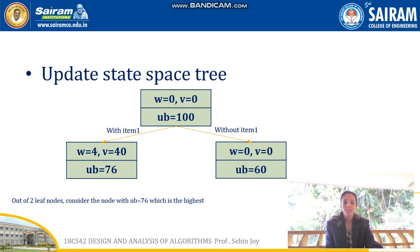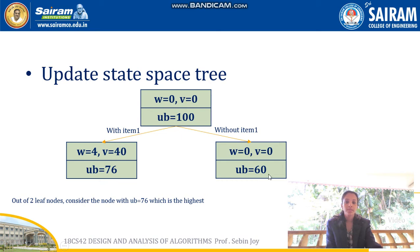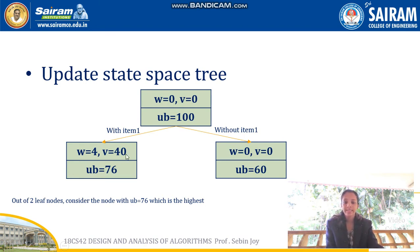Now we draw the state space tree with the initial condition, then with item 1 (W=4, V=40, UB=76) and without item 1 (W=0, V=0, UB=60). We check which upper bound is highest — it is 76. So we add item 1 to the knapsack and continue expanding from that node.